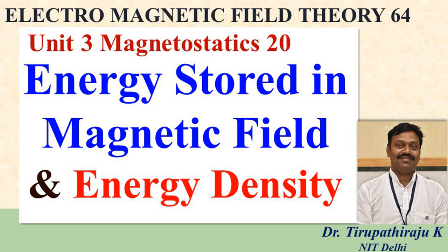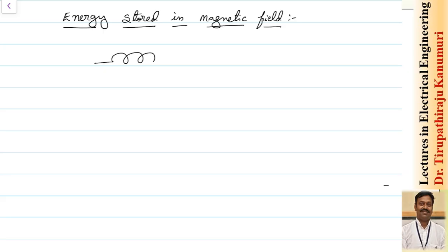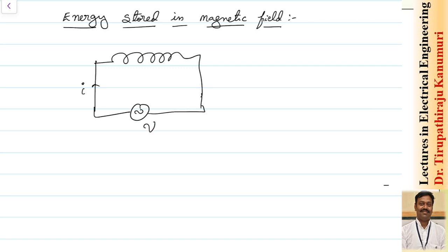Today we are going to discuss energy stored in the magnetic field and energy density. Let us take a solenoid as an example. Through this solenoid I am applying a time-varying voltage so that a time-varying current will pass through this coil. Let us assume the self-inductance of this coil is L1 and the number of turns is N1.